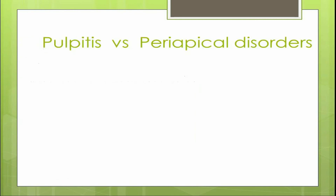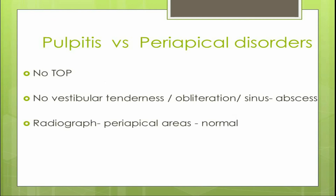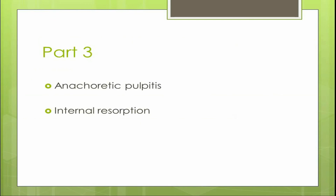A brief note on differentiating pulpitis from periapical disorders: in pulpitis there will be no tenderness on vertical percussion — if tenderness on percussion is present, it indicates a periapical disorder. There will be no vestibular obliteration, sinus opening, or vestibular tenderness, as these findings suggest an abscess. The periapical area will appear completely normal on radiograph. In the next video, we will discuss anachoretic pulpitis and internal resorption.